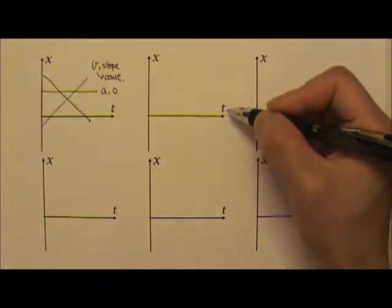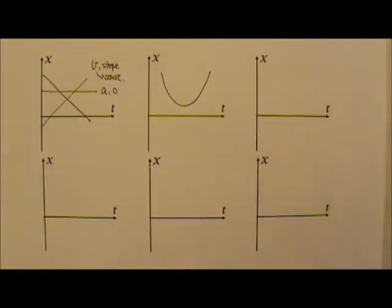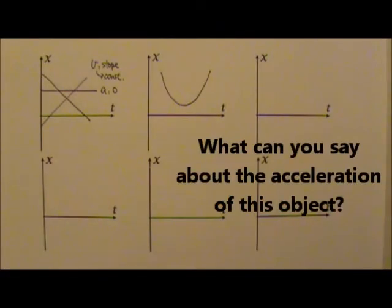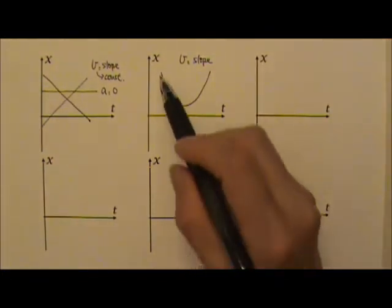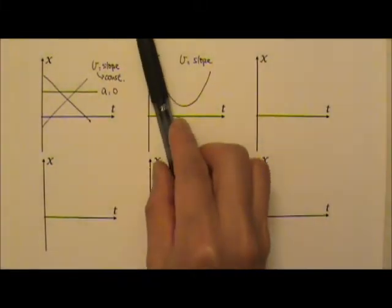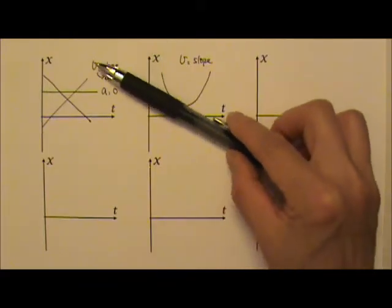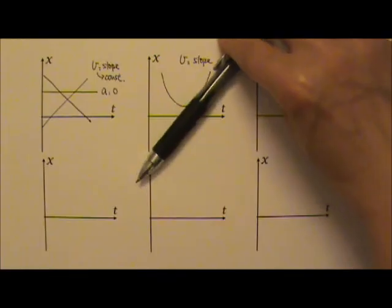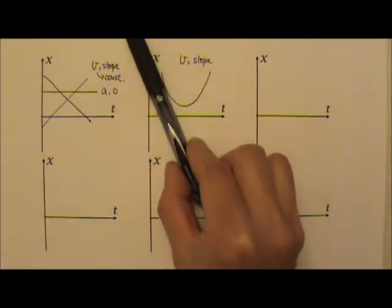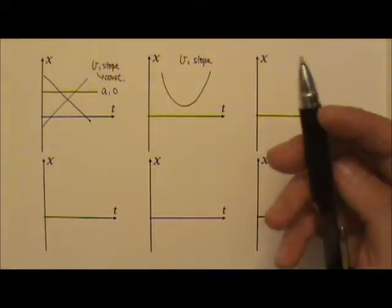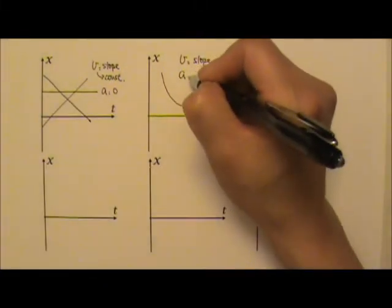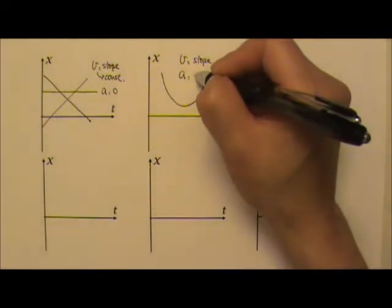What if your position versus time graph is some sort of an upward curve? What can you say about the acceleration of the object? Since the velocity is the slope of this graph, having an upward curve means the slope at first is negative, then it gets less and less negative, then the slope is zero, and then it turns more and more positive. So the velocity is changing in a positive x direction, which means the acceleration — delta v over delta t — must be positive.